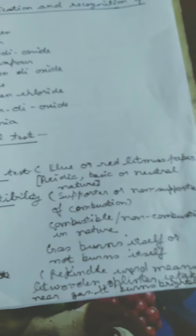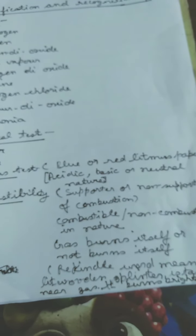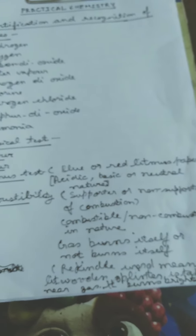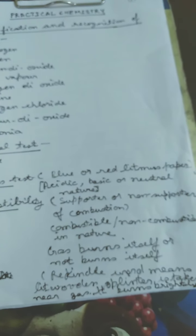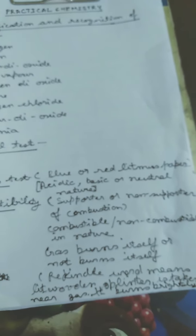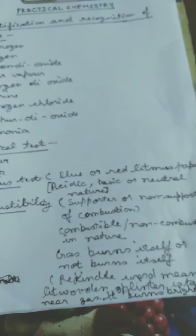The word rekindle is also used in some cases. The rekindle word means lit wooden splinter or we can say glowing wooden splinter or a burning wooden splinter is taken near the gas and it started burning brightly. It means the gas is a supporter of combustion.